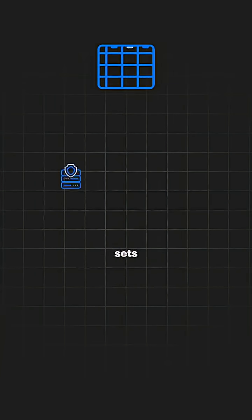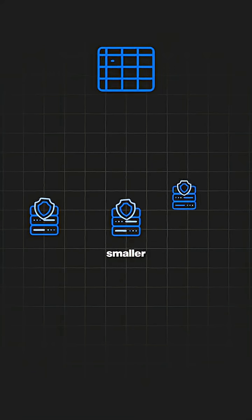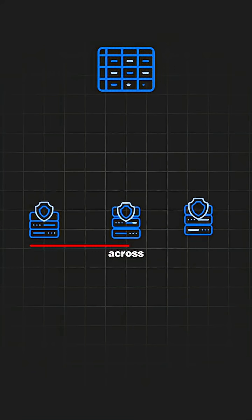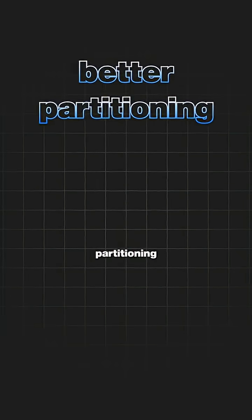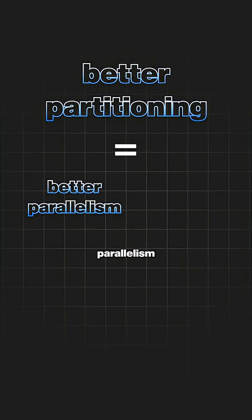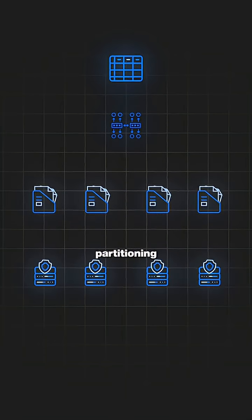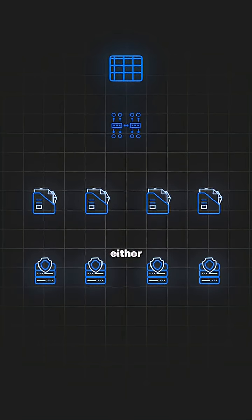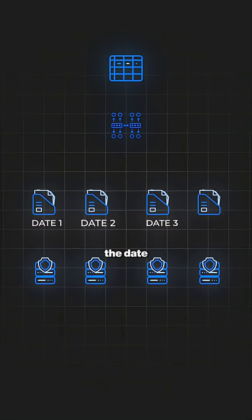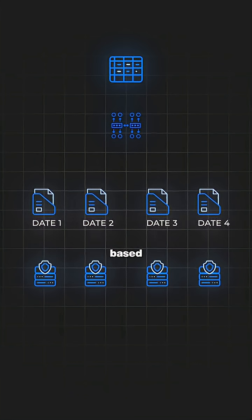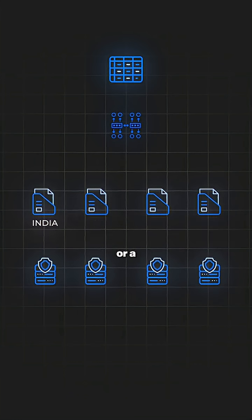Partitioning is dividing your datasets into smaller chunks across the workers. In Spark, better partitioning equals better parallelism and a faster job. It's like dividing your data into small chunks. The best examples of partitioning would be based on a date column, a country column, or a region column — something like that.